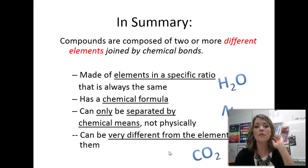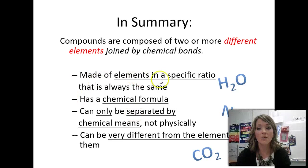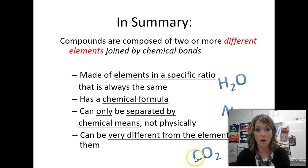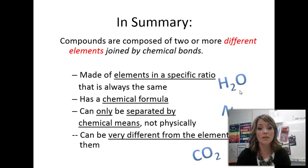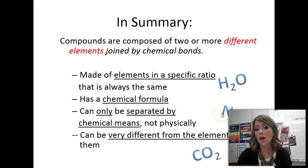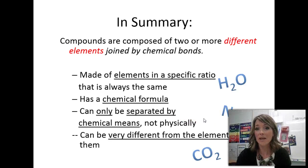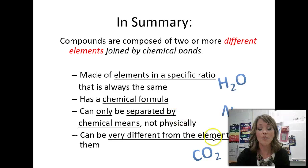Here's a summary of compounds. First, they're made of elements in a specific ratio that's always the same — in order to have water, you have two atoms of hydrogen connected to one atom of oxygen; for carbon dioxide, one atom of carbon connected to two atoms of oxygen. They have a chemical formula — H2O or NaCl. They can only be separated chemically, not physically, because they're chemically hooked together. And the properties can be very different from the elements that are in the compound.